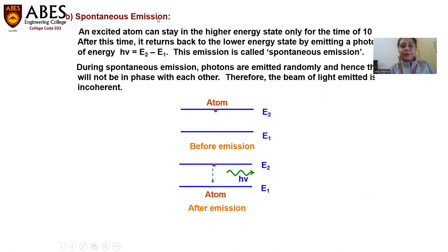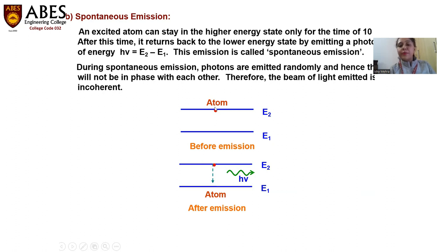Spontaneous means random. In case of spontaneous emission, the atom in the excited state will not wait for a longer period of time — the lifetime of such states is very small — and it will suddenly jump down. When it jumps down, it is going to emit the radiation it has absorbed, that is h-nu. This is spontaneous emission.